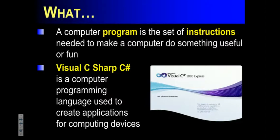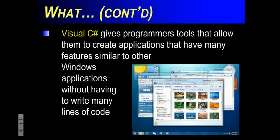Microsoft offers the free version called Express, and then there's one you can pay for. For the purposes of this course, the Express version is more than anything you need — you don't need the professional version because it's expensive and sent to companies. What C# does is it's designed by Microsoft to really target the Microsoft Windows environment for making programs for Windows.